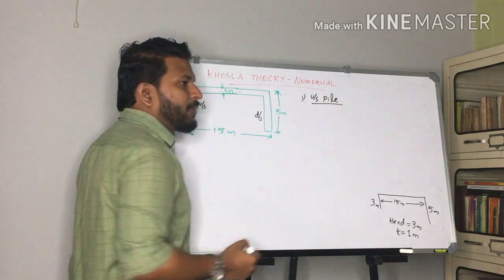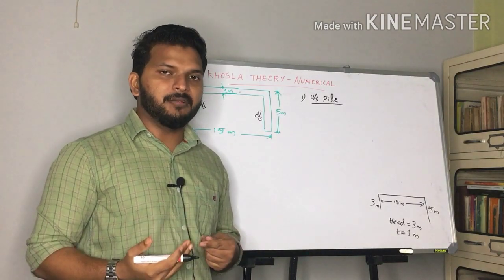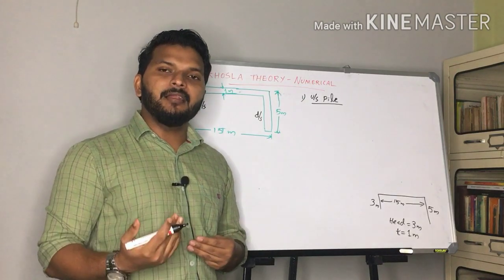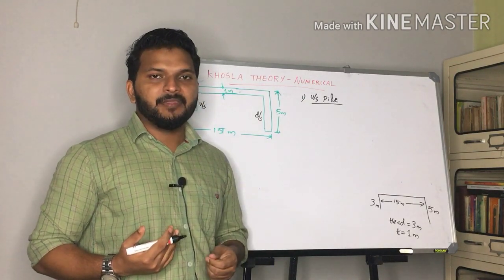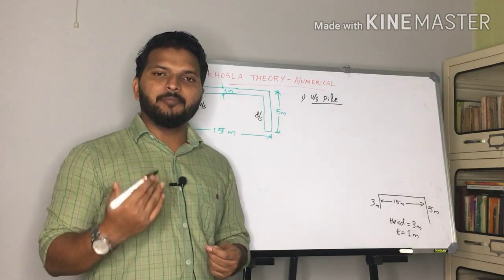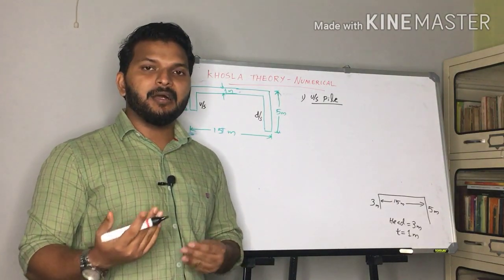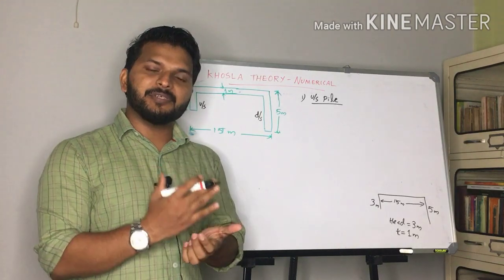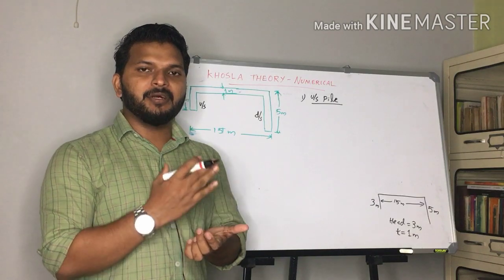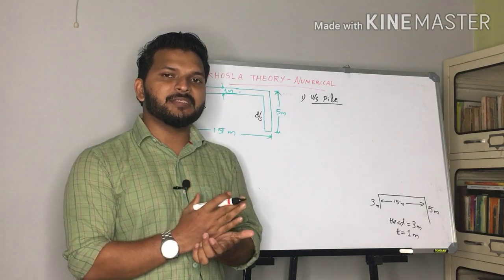First of all, we have two methods in Khosla's approach. One is Khosla's equations, and the other is Khosla's curves. We can read the pressure percentages from the graph using the curves method. Let's proceed using Khosla's equations and curves to find the uplift pressures.